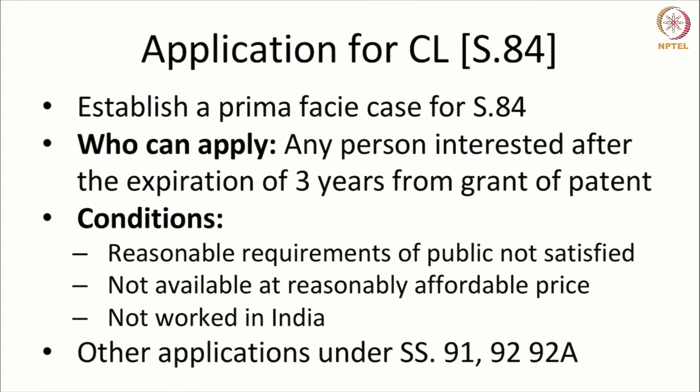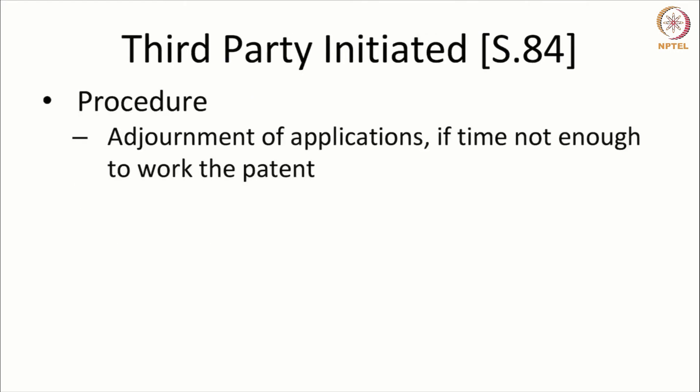Apart from section 84, there can be applications under sections 91, 92, and 92A — the three other types of compulsory licenses. The procedure is that the application has to be disposed of in a timely fashion. There can be opposition to the application; if somebody files an application for a compulsory license, that can be opposed, and there is a procedure for opposition.